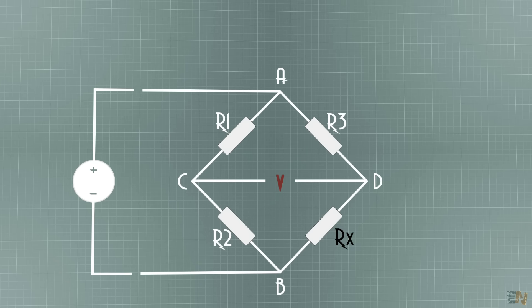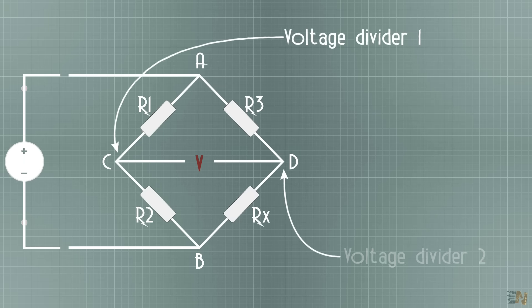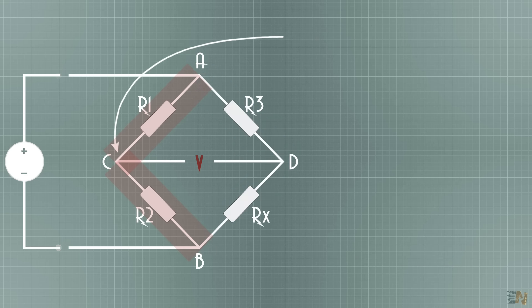So here is how this works. Between the points A and B, we have two voltage dividers. One divider is made by R1 and R2 and the other one is made by R3 and the unknown resistor. Using the voltage divider formula, we get that the voltage on point C is R2 divided by the sum of R1 and R2 and multiplied by the input voltage.